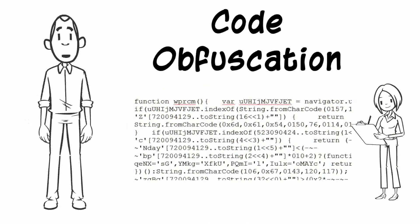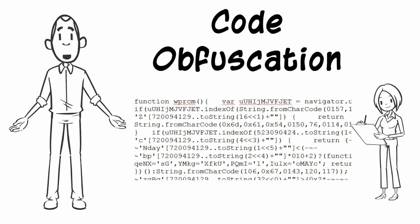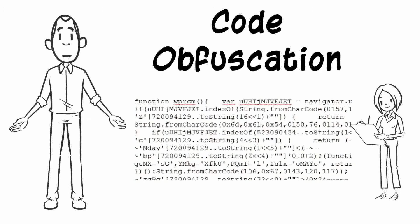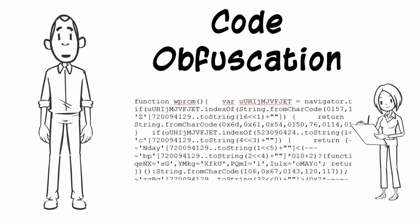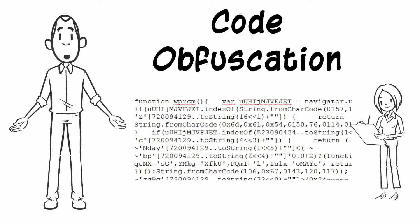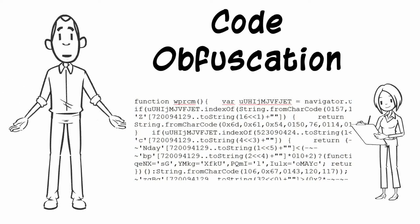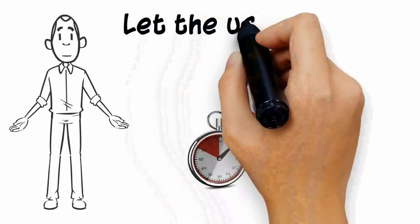Step 3: Code obfuscation. Code obfuscation, in simple words, means making your program tough to decompile. Also try to make the decompiled code tough to understand. There is an automatic part of the building process that helps you in performing the obfuscation task.